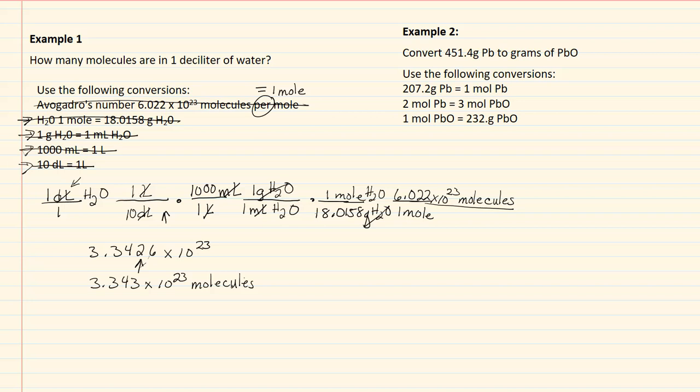Let's go to our next conversion. I'm going to put it underneath here. It says we're to convert 451.4 grams of Pb to grams of PbO. So if you didn't know, Pb is, I believe, lead. So we're going to start with what we were given, which is the 451.4 grams of the Pb.